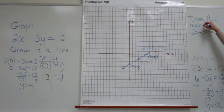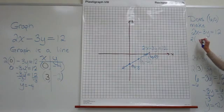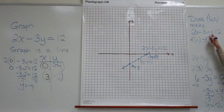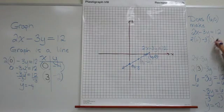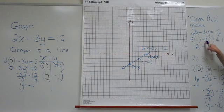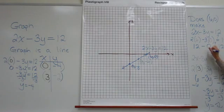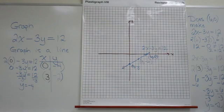And take out the y and put in the y-coordinate of the ordered pair we're checking. So we have 2 times, take out the x and put in 6, minus 3 times, take out the y and put in 0. Does that come out to be 12? 2 times 6 is 12 minus 3 times 0 is 0. Does that come out to be 12? Well, 12 minus 0 is 12. 12 equals 12. Yes. When I plug those ordered pairs into that equation, that ordered pair, the coordinates, into that equation, it does make that equation true. So we would say yes.